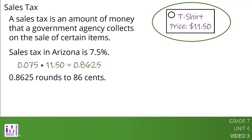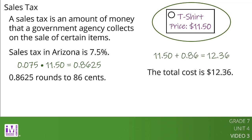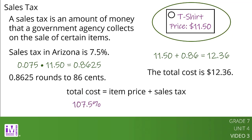The total cost of an $11.50 shirt after applying 7.5% sales tax is $12.36, since 11.50 plus 0.86 equals 12.36. The total cost to the customer is the item price plus the sales tax. We can think of this as a percent increase because the total cost to a customer is 107.5% of the price listed on the tag, since 100 plus 7.5 is 107.5.